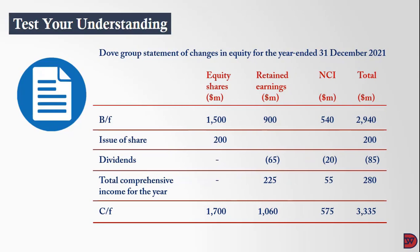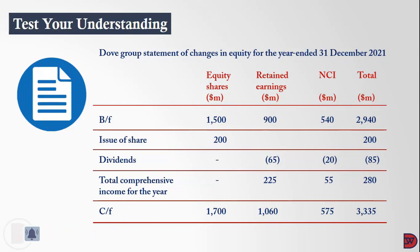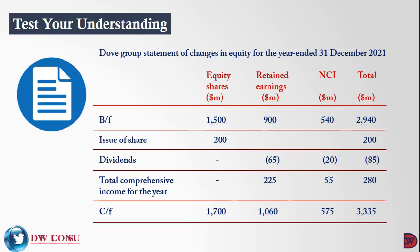The DAF Group statement of changes in equity for the year ended 31st December 2021 has columns for equity shares, retained earnings, non-controlling interest, and total. Opening balances are 1.5 billion for equity, 900 million for retained earnings, and 540 million for non-controlling interest. There was an issue of 200 million equity shares, dividends of 65 million and 20 million, and total comprehensive income allocated 225 million to the parent and 55 million to non-controlling interest. Closing balances are 1.7 billion equity, 1 billion 600 thousand retained earnings, 575 million non-controlling interest, totalling 3 billion 335 million dollars.